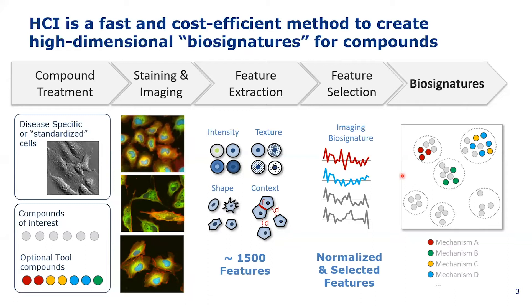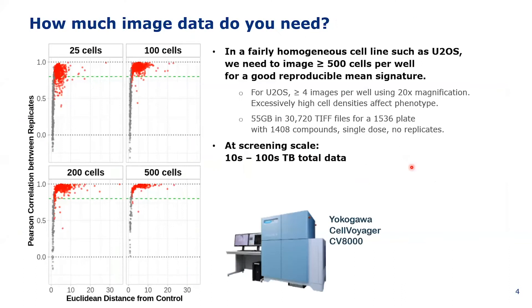The resulting feature set is in our case around 1,500 features, many of which contain a high degree of correlation. Depending on the application, we perform feature selection and normalize features that have a very different scale. In general, a biosignature — what we call this phenotypic profile — does reflect the mode of action of a particular compound in a cell line. With this pipeline you generate a ton of data, so one of the important questions to ask is how much image data do we actually need to define a good, reproducible biosignature.